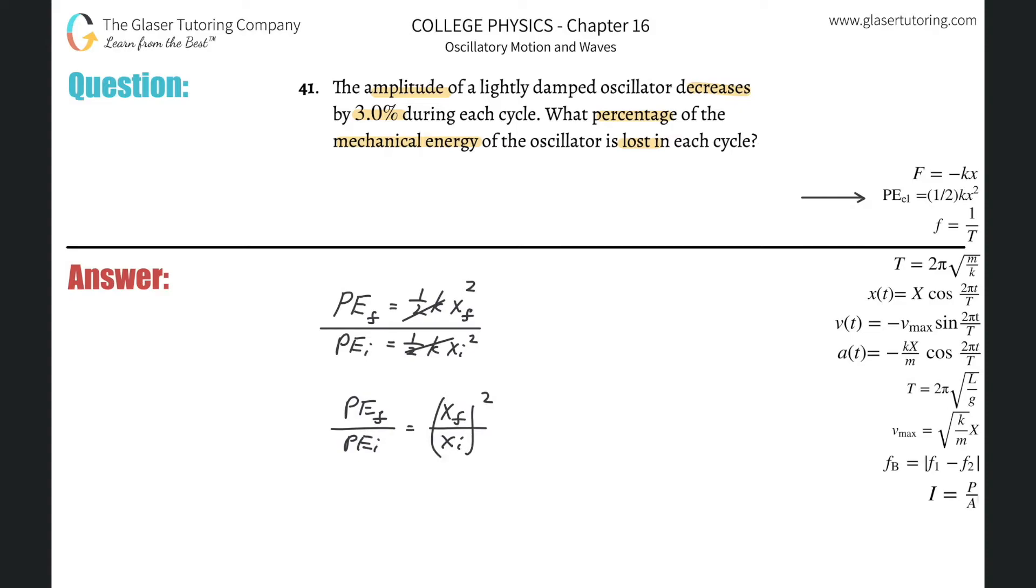Whenever there's percent change, a nice easy way to do this would be to just use actual numbers. Let's say that the initial displacement is 100. And that means that if the amplitude is decreased by 3%, as it tells us in the problem, then the final amplitude or the final displacement would be 97. 97 would be a 3% decrease from 100. So that should hopefully make sense.